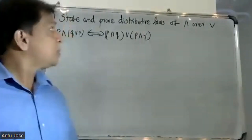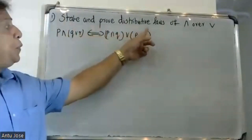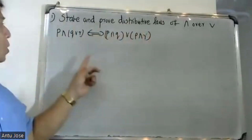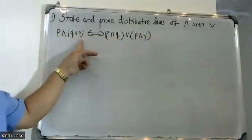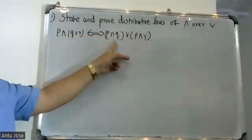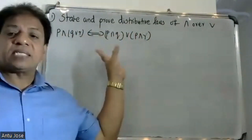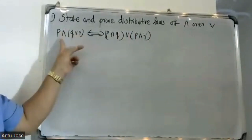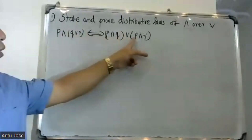Good morning students. State and prove the distributive law of AND over OR. P and (Q or R) is logically equal to (P and Q) or (P and R).